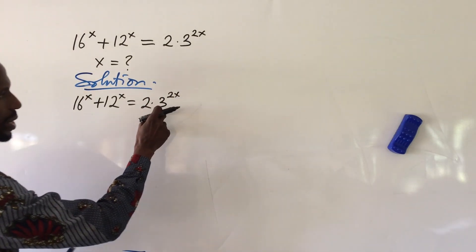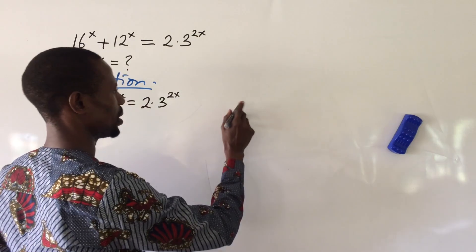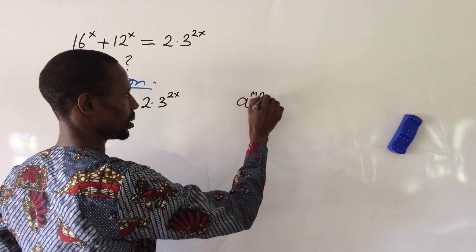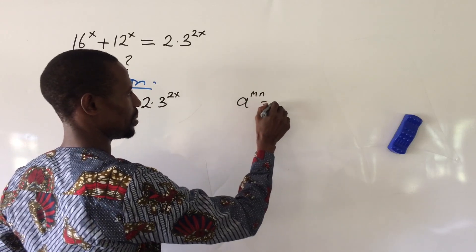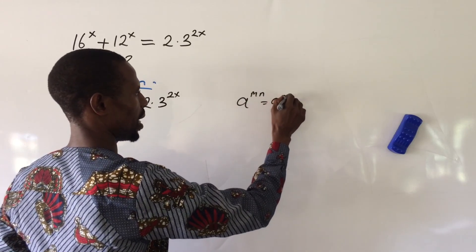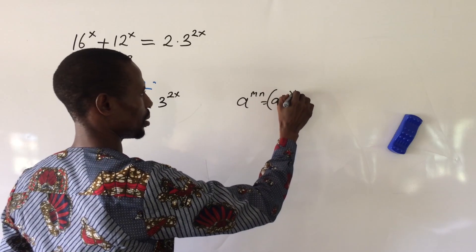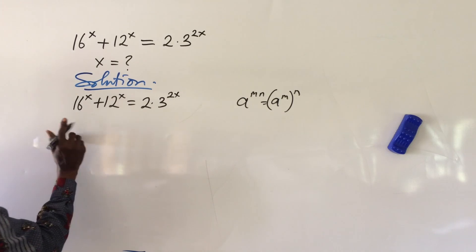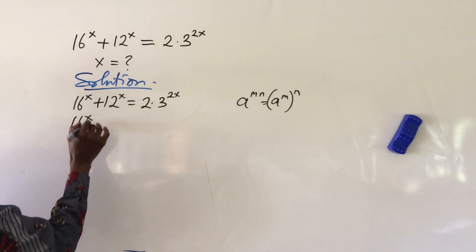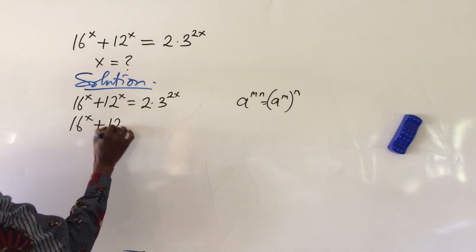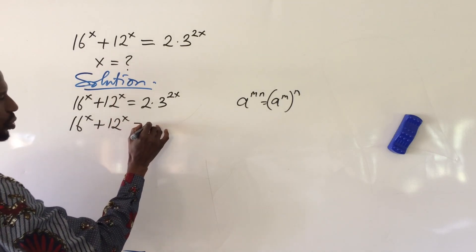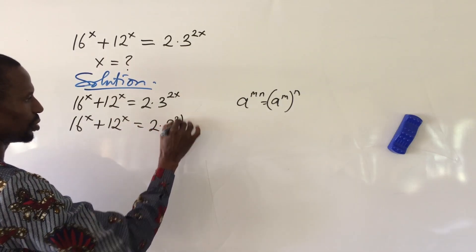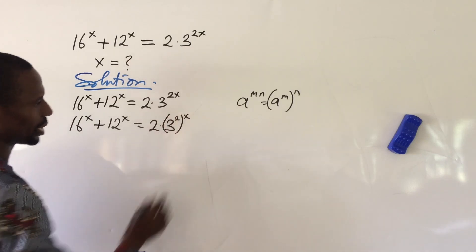Here we can rewrite this. According to the law of indices, if you have a to the power of m·n, this is the same as a to the power of m, all to the power of n. So we can separate these, and we're going to have 16 to the power of x plus 12 to the power of x equal to 2 · 3 to the power of 2, all to the power of x.